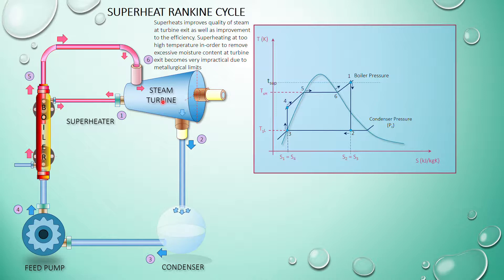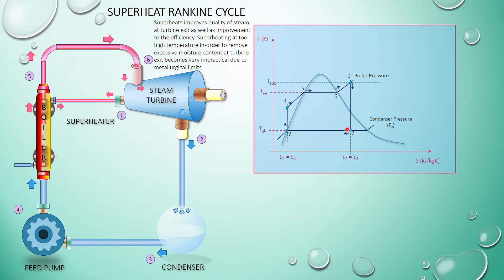The purpose of superheating is to improve the quality of the steam at point 2. When you refer to point 1, the steam is being superheated to a temperature T-superheated at boiler pressure. The superheating process follows a constant pressure process.